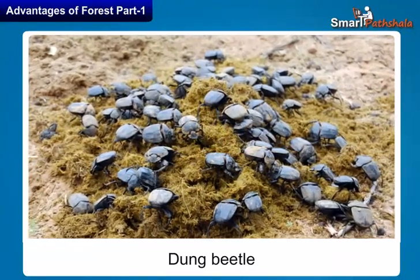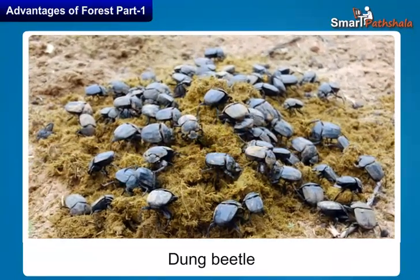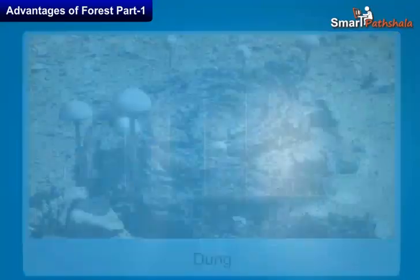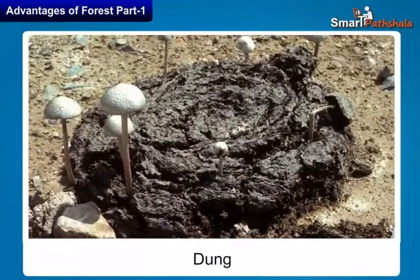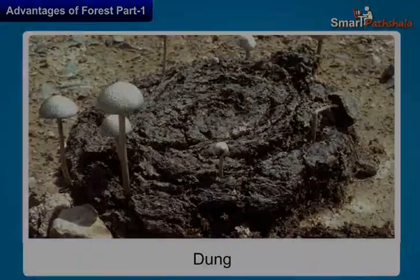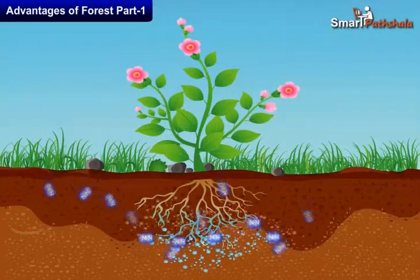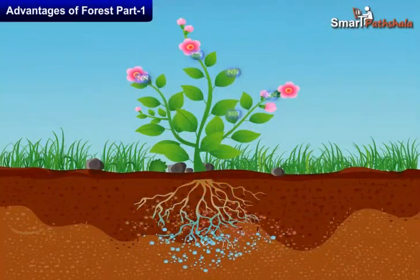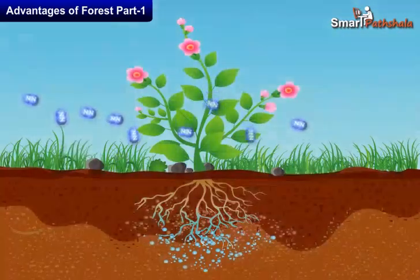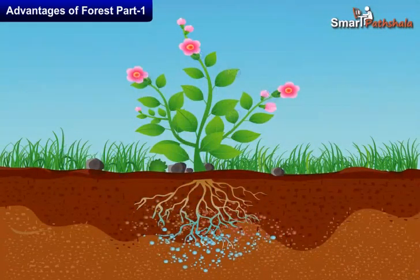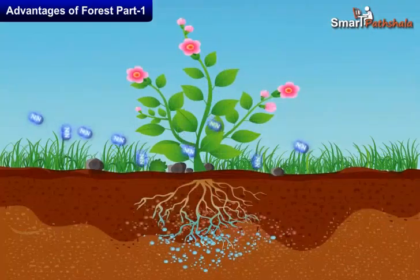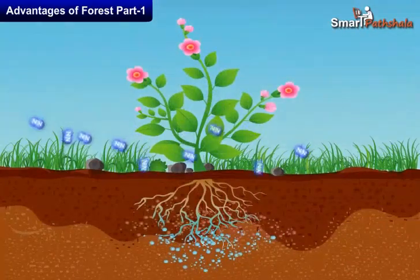We can find decaying heaps of animal droppings in forests. Several beetles and bugs feed on these heaps. Seedlings of herbs and shrubs also germinate on these heaps. The animals also disperse the seeds of certain plants and help the forest to grow and regenerate, and the decaying animal dung also provides nutrients to the seedlings to grow.